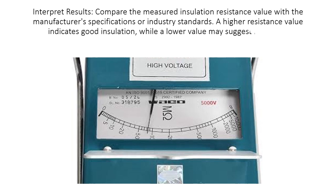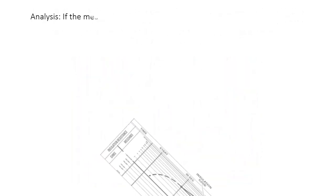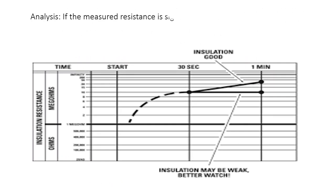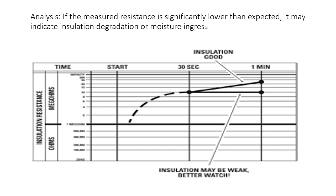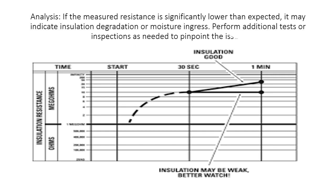Interpret Results: Compare the measured insulation resistance value with the manufacturer's specifications or industry standards. A higher resistance value indicates good insulation, while a lower value may suggest insulation deterioration or a fault. If the measured resistance is significantly lower than expected, it may indicate insulation degradation or moisture ingress. Perform additional tests or inspections as needed to pinpoint the issue.